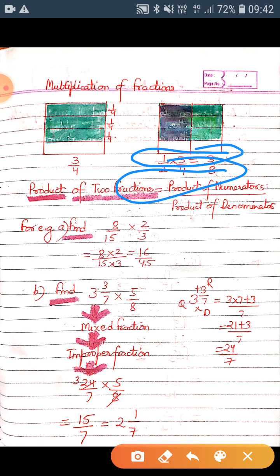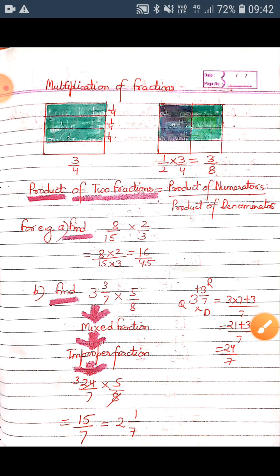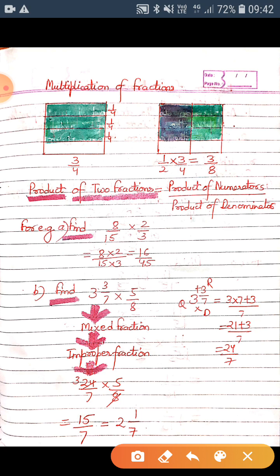This concept we will be using it in multiplying the two fractions. So let us take an example: we have to find the product of eight by fifteen and two by three. So we put the sign over here.